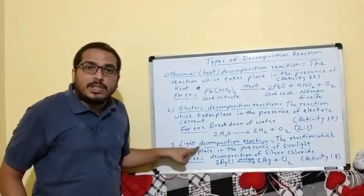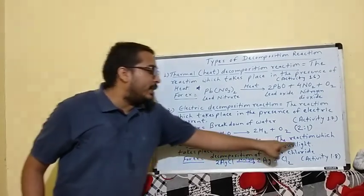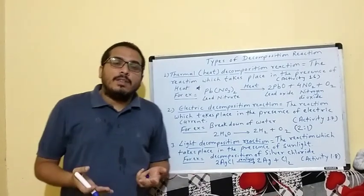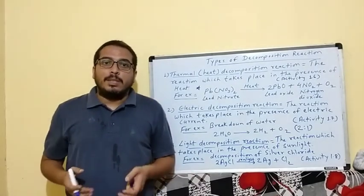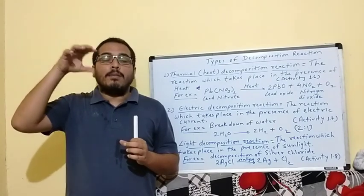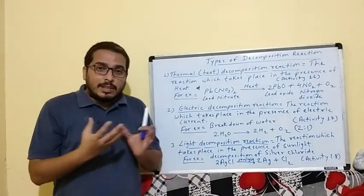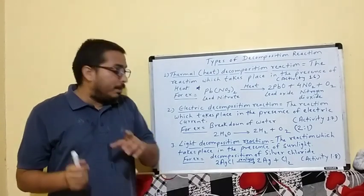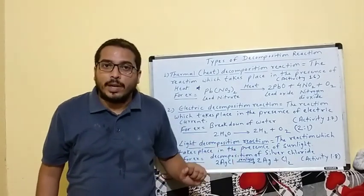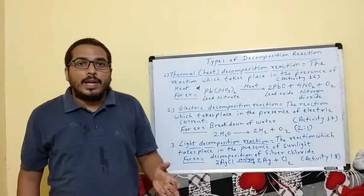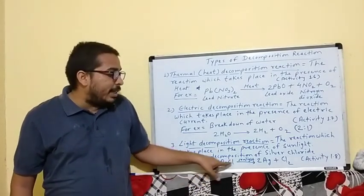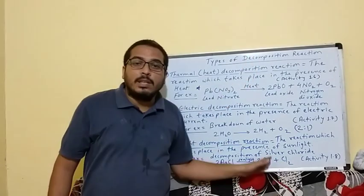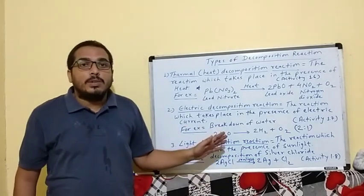The third type is light decomposition reaction — the reaction which takes place in the presence of sunlight. When sunlight falls on the substance it is divided into two different substances. For example, the decomposition of silver chloride (AgCl): silver chloride breaks down into silver and chlorine. These three are the types of decomposition reaction.